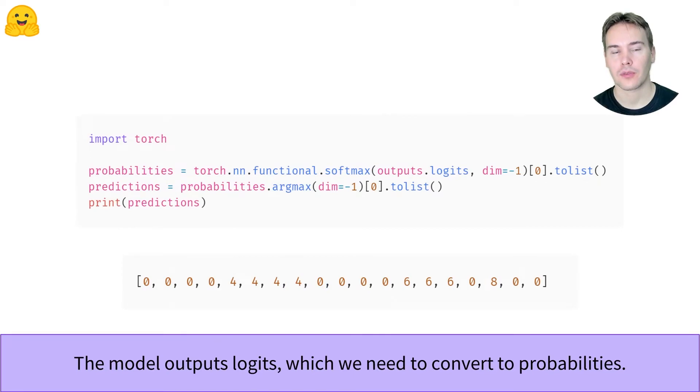Like all the other models of the Transformers library, our model outputs logits which we need to turn into predictions by using a softmax. We also get the predicted label for each token by taking the maximum prediction. Since the softmax function preserves the order, we could have done it on the logits if we had no need of the predictions.